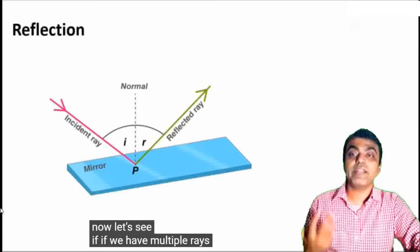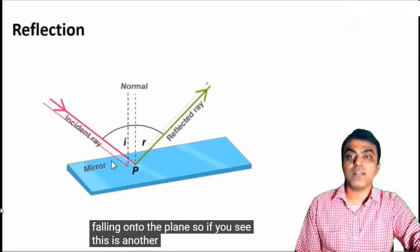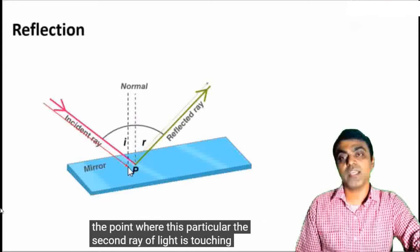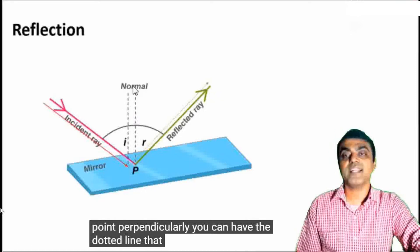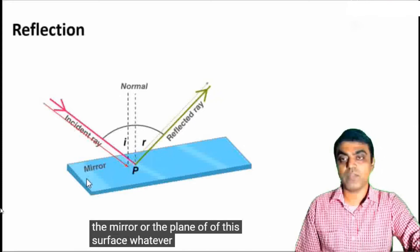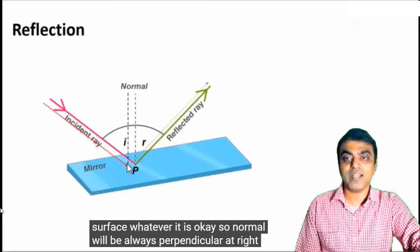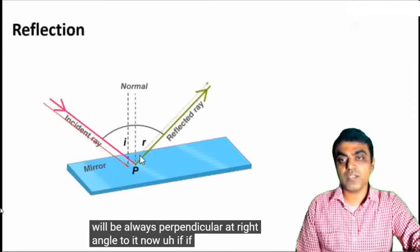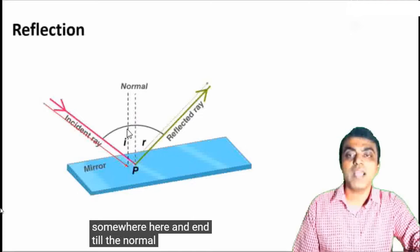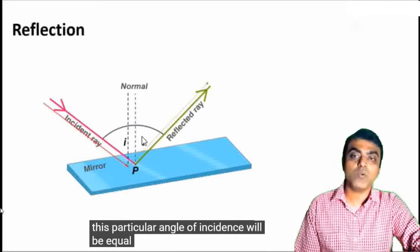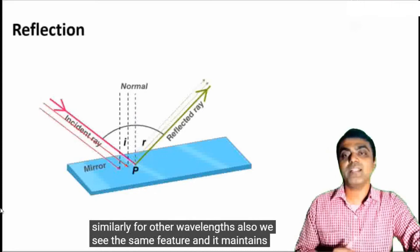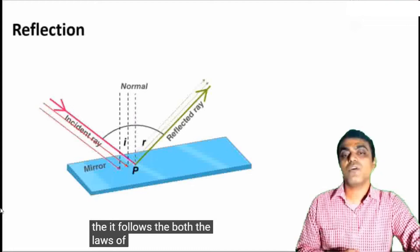If we have multiple rays of light falling onto the plane, this is another ray of light falling onto the plane. Now, the point where this second ray of light is touching, at that point perpendicularly you can have the dotted line, that is the normal. Normal is always perpendicular to the plane of the mirror or the plane of the surface. So the angle of incidence will be equal to the angle of reflectance, and it follows both the laws of reflection.